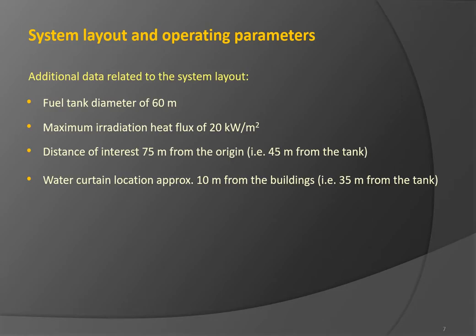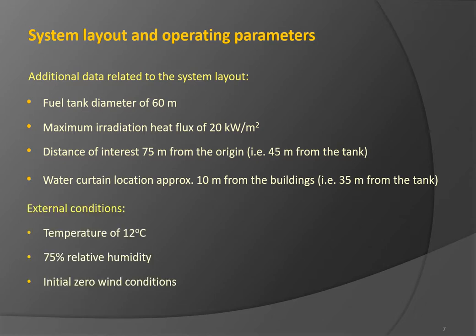Additional data related to the system layout had been provided during the project. The fuel tank has a diameter of 60 meters. The fire source can be assumed to have a maximum irradiation heat flux of 20 kW per square meter at the tank wall. The distance of interest is 75 meters from the center of the tank, or 45 meters from the tank wall, where the irradiation heat flux decreases to 6 kW per square meter. The water curtain shall be placed approximately 10 meters from the building, which means 35 meters from the tank wall. A temperature of 12 degrees Celsius and 75% relative humidity are the anticipated ambient conditions; also, zero wind conditions can be assumed.